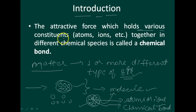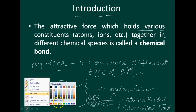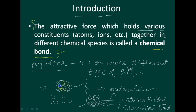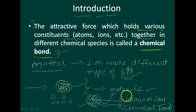The attractive force which holds the various constituent atoms together in different chemical species is called a chemical bond. Please note down this definition. This molecule can be made up of different types of atoms, and these different types of atoms should have some attraction force between them — this is called a chemical bond.